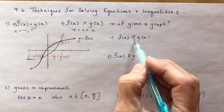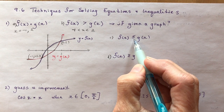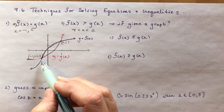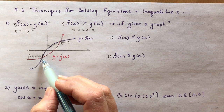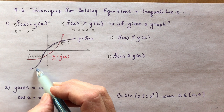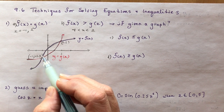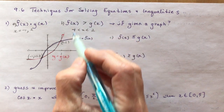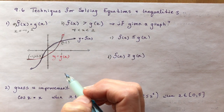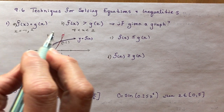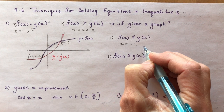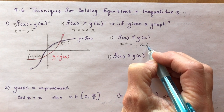Where is f(x) less than or equal to g(x)? I want to know where f(x) is less than or equal to g(x), so I include the endpoints. Here the y-values are lower. So for part c we've got x less than or equal to negative 1, and x greater than or equal to 2.